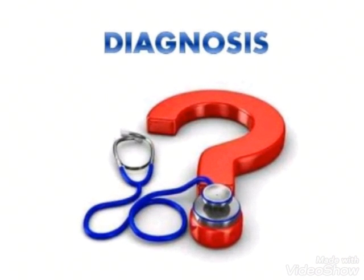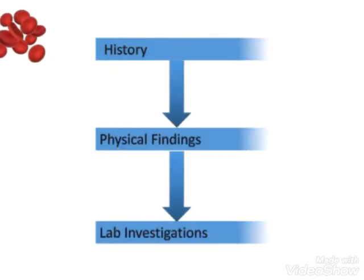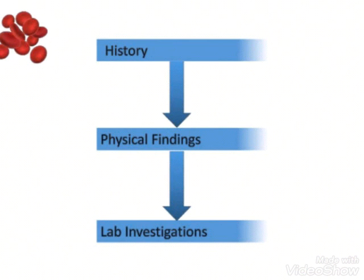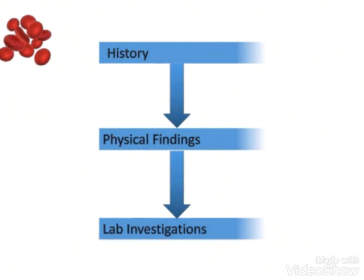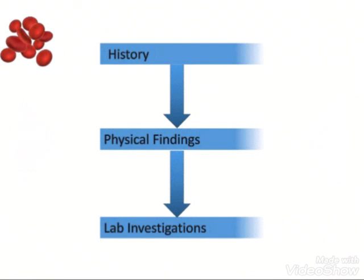Now we will look at the diagnosis — what diagnostic procedures you can perform. First and foremost, we are going to do history collection, in which you will find out the patient's family history of neutropenia and their lifestyle pattern, such as whether they are alcoholic or work in an industrial area. Then in the physical examination, you will check the patient's temperature, cough, and breath sounds for any shortness of breath. In lab investigations, we will send blood for a CBC count to determine the number of granulocytes.